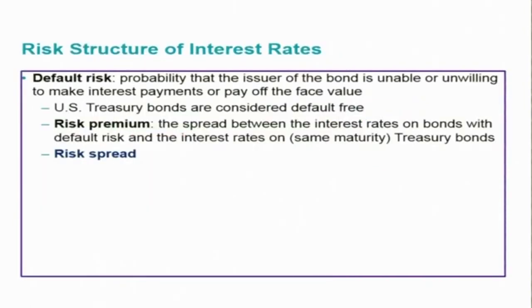Default risk is the probability that the issuer of a bond is unable or unwilling to make interest payments or pay off the face value. US Treasury bonds are considered default-free bonds. The risk premium — also referred to as the risk spread — is the spread between interest rates on bonds with default risk and the interest rates on Treasury bonds or Treasury bills.